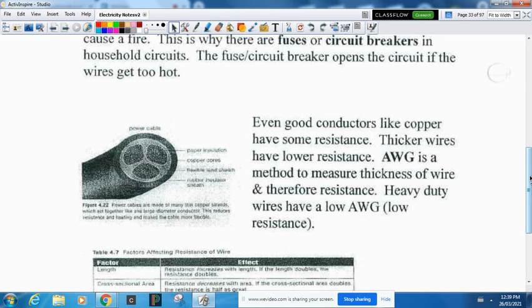Even good conductors have some resistance. How do you get the lowest resistance? Big thick wires would have lower resistance, shorter wires would have lower resistance, and cooler wires would have lower resistance.